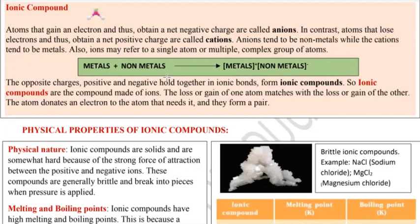Metals and non-metals are made of ions — metals carry a positive charge as positive ions, and non-metals carry a negative charge. The opposite charges, positive and negative, hold together in ionic bonds and form ionic compounds.